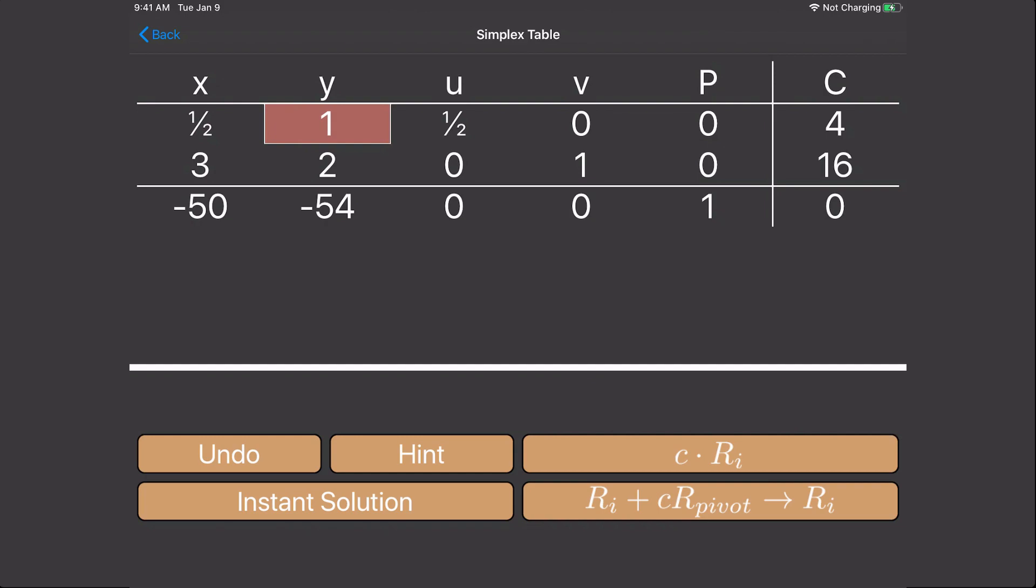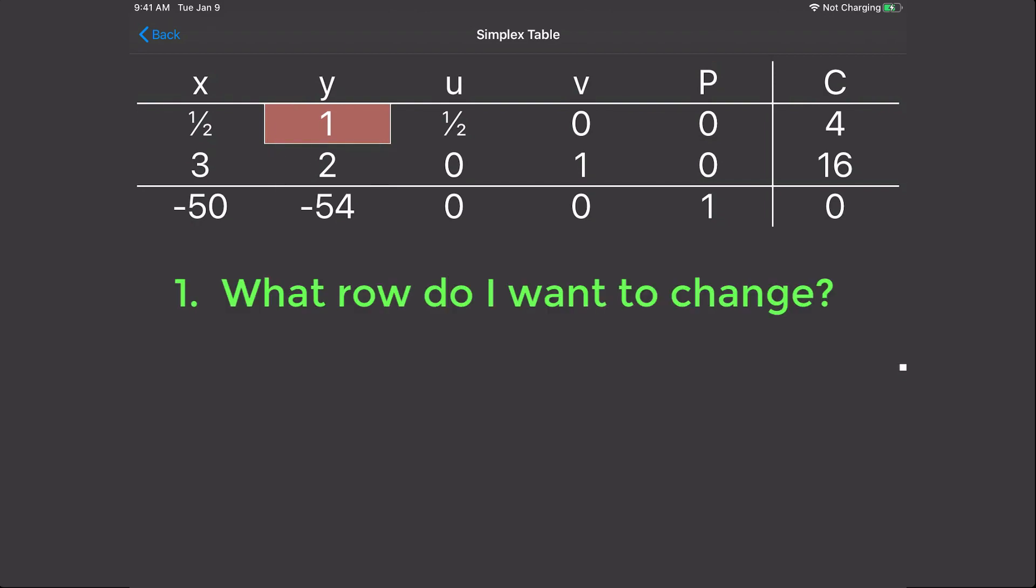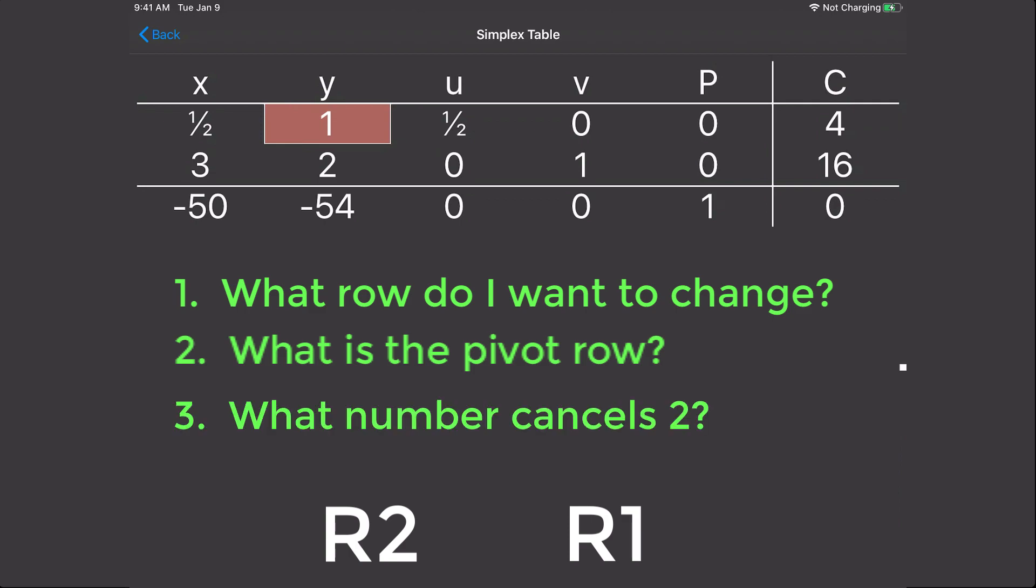Now we need to make the pivot column into a unit column. A unit column is a column with a 1, and the rest are 0s. This means we need to make that 2 into a 0, and the negative 54 into a 0. We can use the following steps to come up with the operation to do just that. What row do you want to change? So let's start with row 2. What is the pivot row? That's row 1. And what number cancels that 2? Well, here's a hint. It's always going to be the negative of what number is shown. So that means we're going to use negative 2.